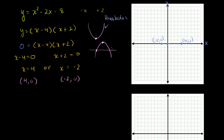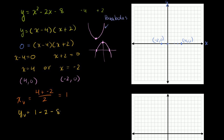So the x-value of the vertex is the average of the two x-intercepts. The x for the vertex is 4 plus negative 2 over 2, which equals 2 over 2, which equals 1. And what is y when x equals 1? y for the vertex equals 1 squared minus 2 times 1 minus 8, which is 1 minus 10, equal to negative 9. So the vertex is at the point 1, negative 9.